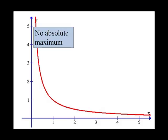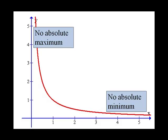Well, there's still no absolute max because we have the vertical asymptote at 0. But now, there's no absolute minimum either because this graph will continue to decrease and get closer and closer to 0 as the inputs go to infinity.